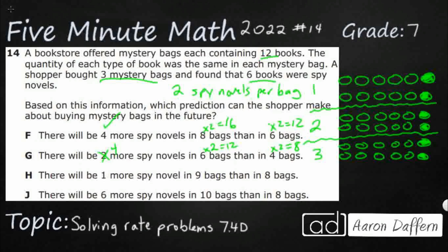Answer choice H says there will be one more spy novel — well, we can tell that's going to be wrong because there are sets of two, so an odd number won't work. But let's verify: in nine bags I have 18 spy novels, and in eight bags I have 16. That's a difference of two, not one. So H is incorrect.